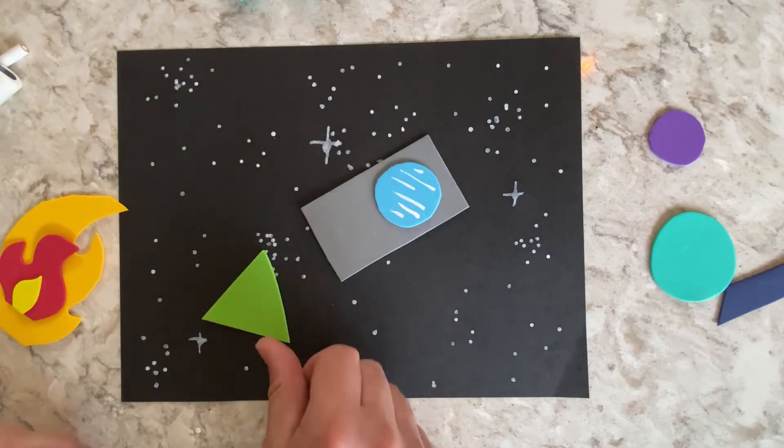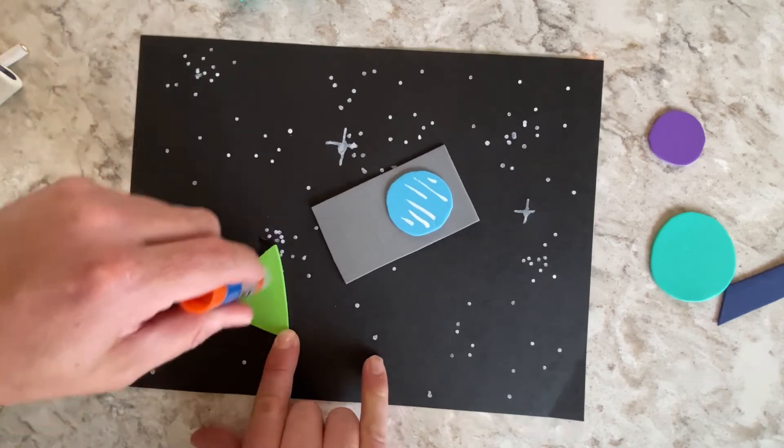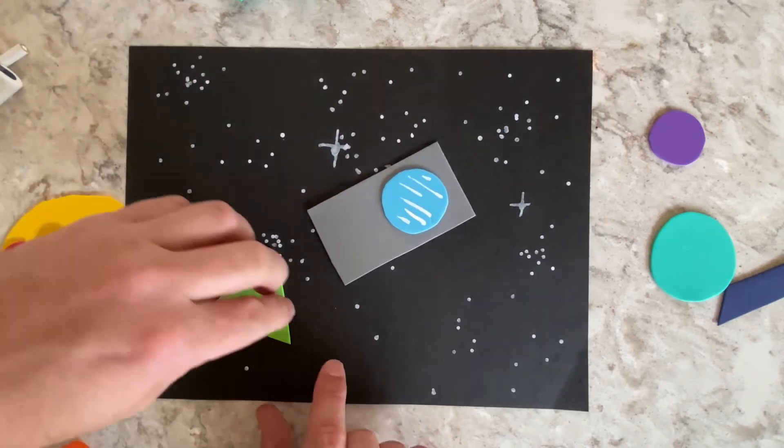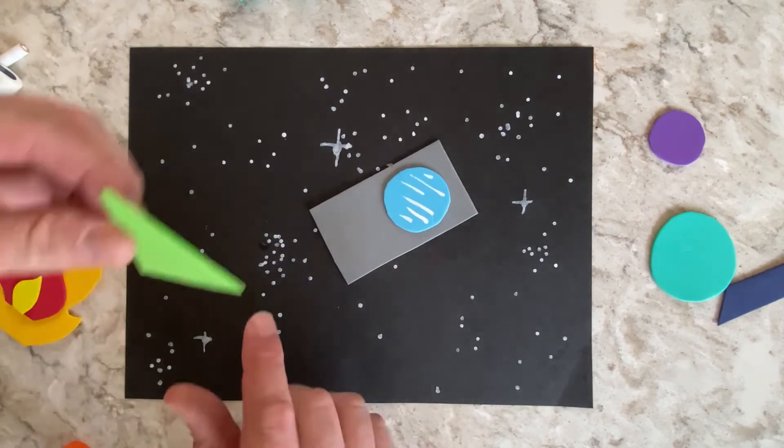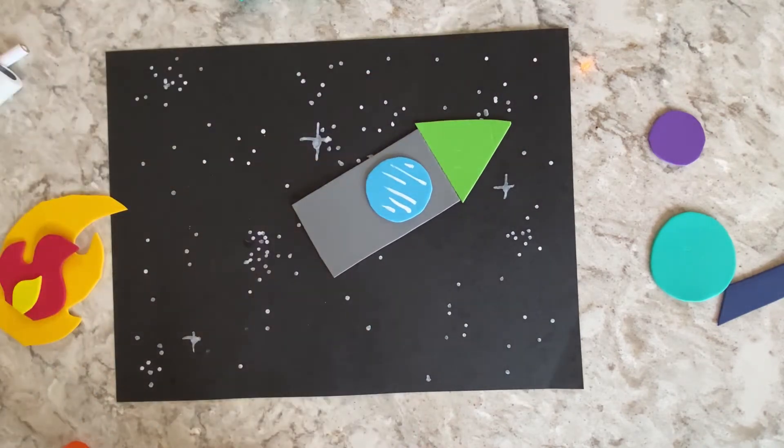So now I've got my green triangle. I'm going to put that as the front. It's the very front of my rocket ship. I've got it right here, and I'm going to go BAM! There we go. Starting to take shape.